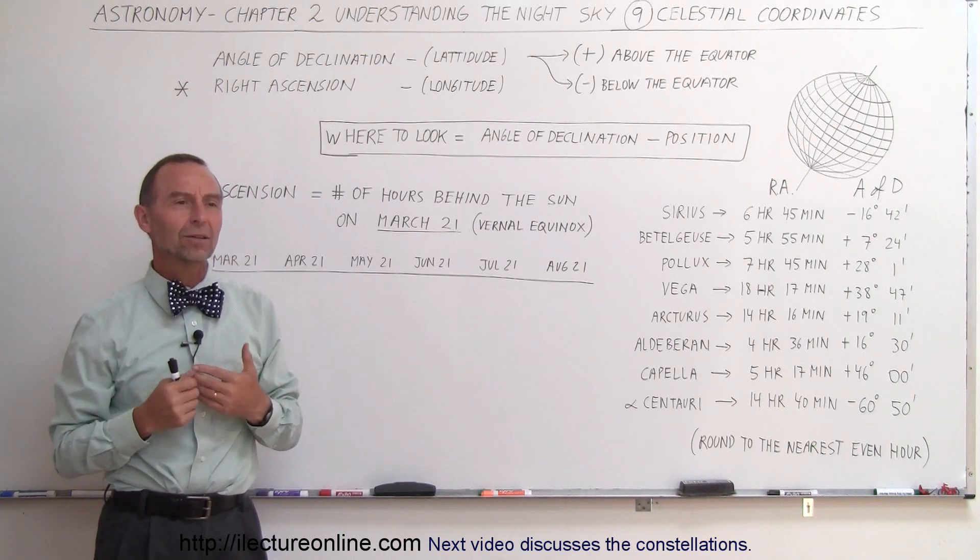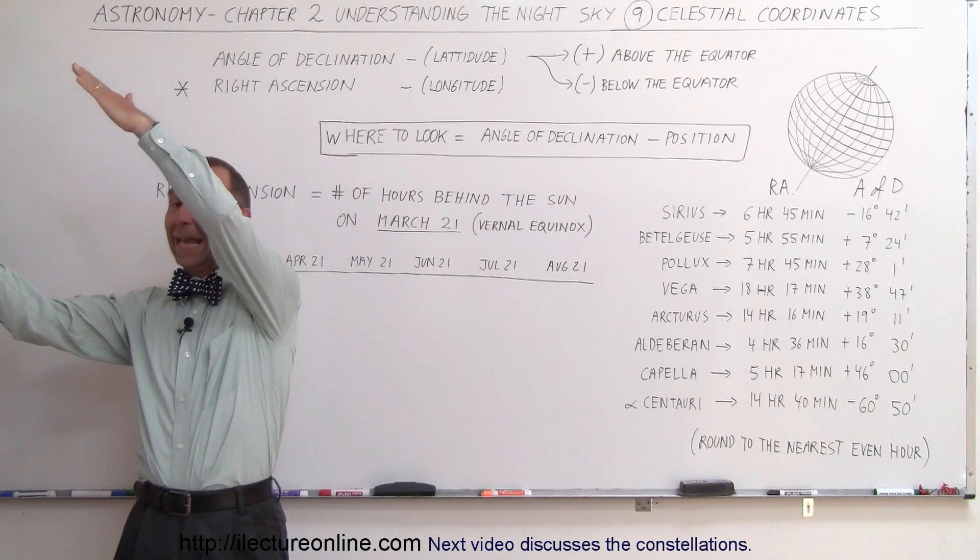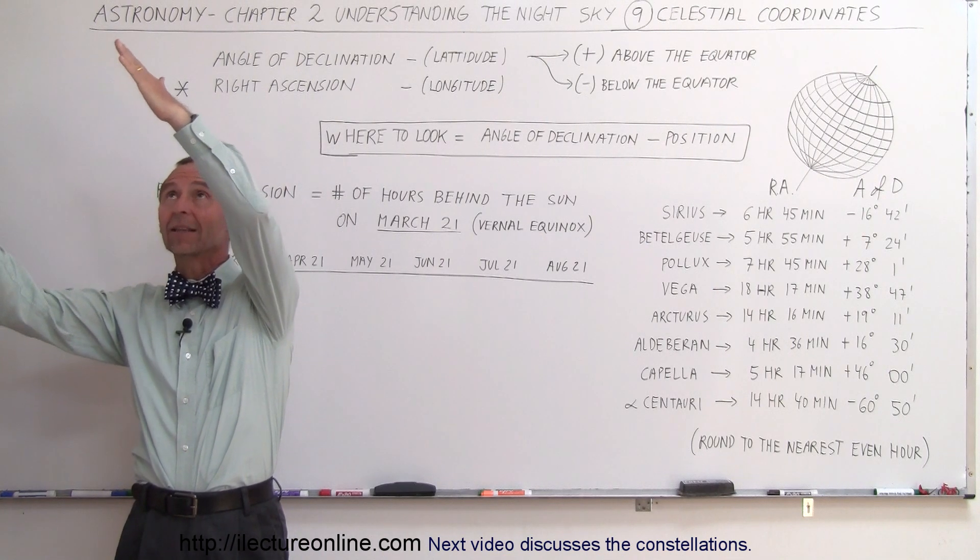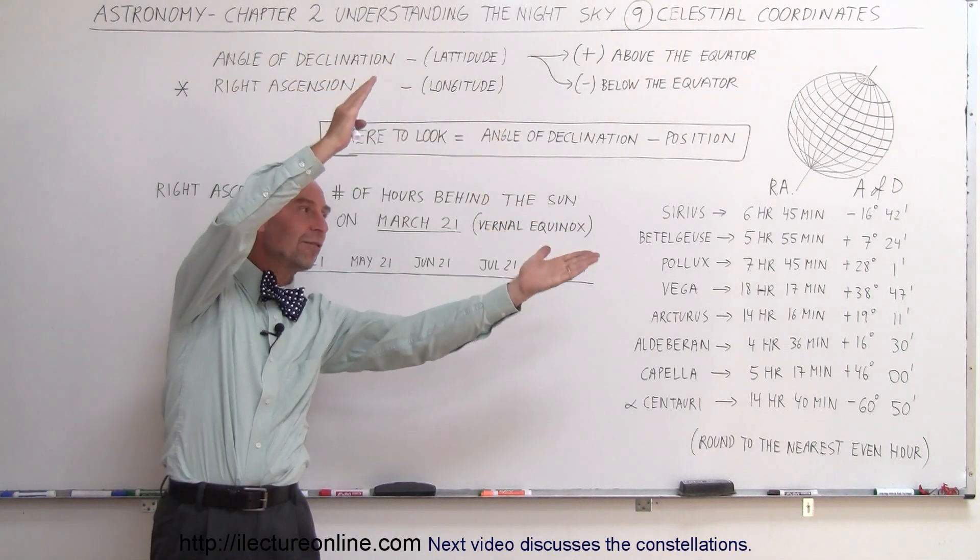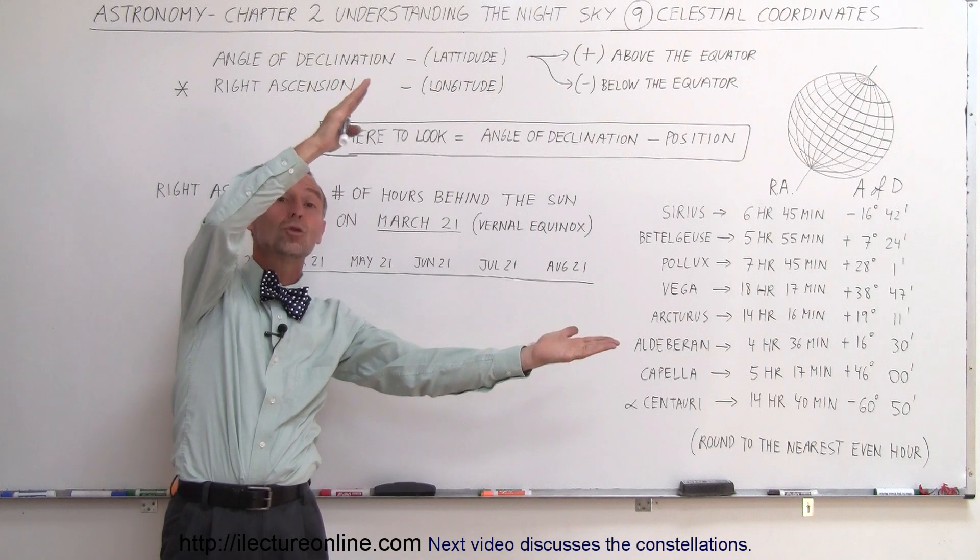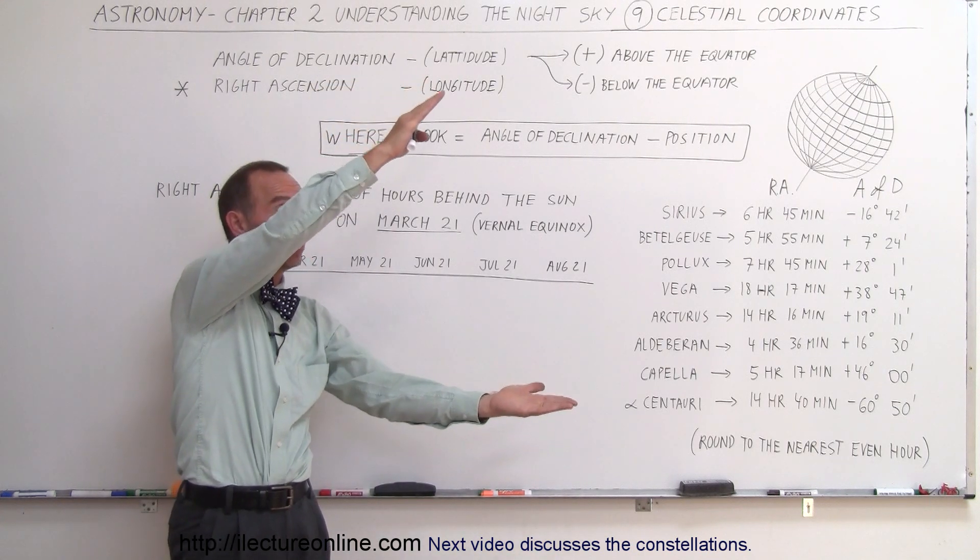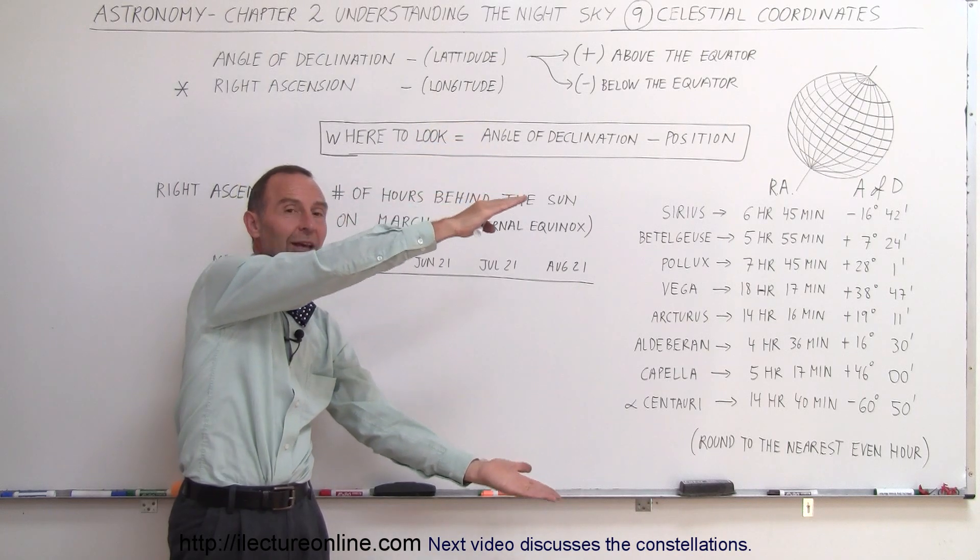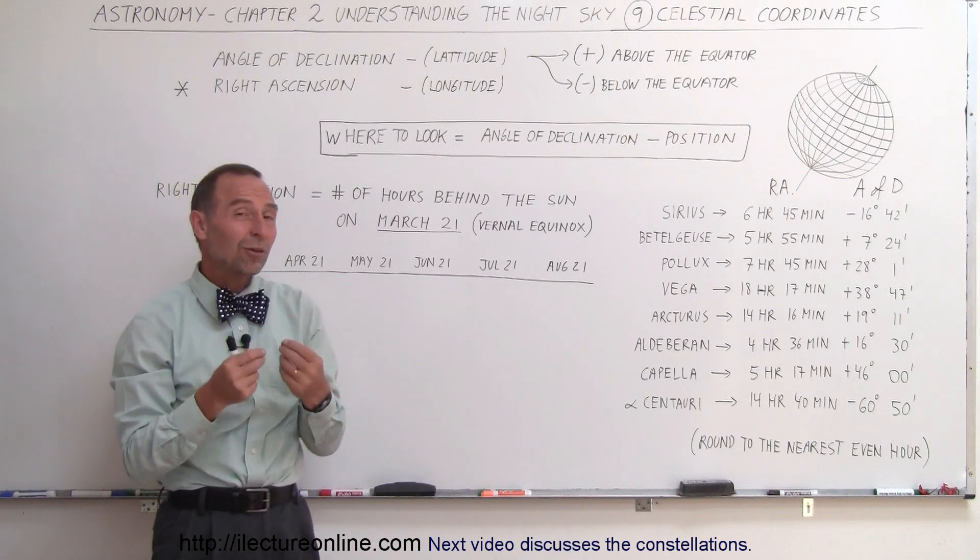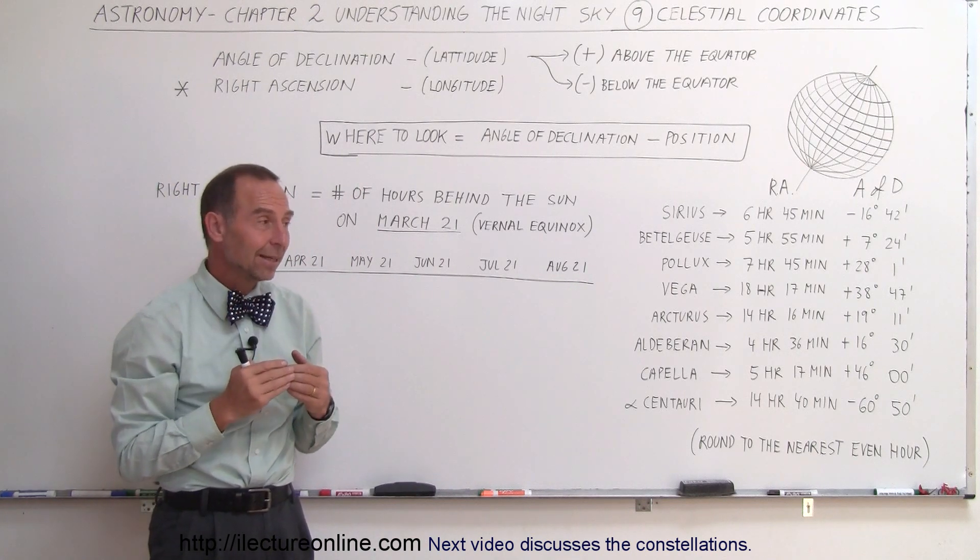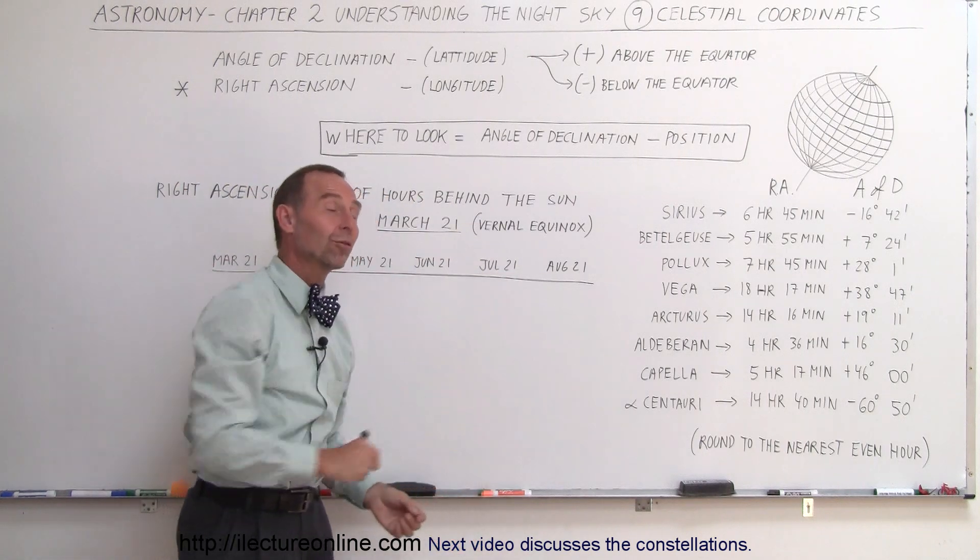If something is two hours behind the Sun, then when the Sun rises two hours later, the star will rise. Of course, you can't see the star because of daylight. The Sun moves through the daytime, and finally in the evening, the Sun sets and the star will be two hours behind it. So for the next two hours, the star will still be up in the sky, slowly moving towards the horizon. And then two hours later, it will also set over the horizon and disappear. So if something is two hours behind the Sun on a particular day, that means you can only see it for that number of hours before it disappears over the horizon as well.